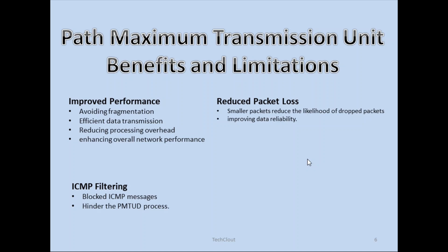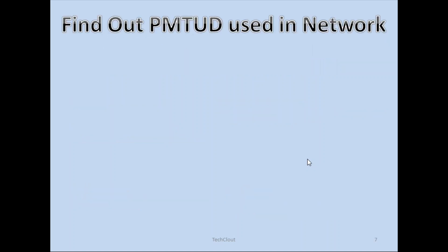It also provides ICMP filtering so that we can block ICMP messages or hinder the PMTUD process. It also looks for path changes, so in a big network or multi-hop network, if the path gets changed, it will re-initiate the discovery process to identify which path PMTUD can follow to avoid fragmentation and do minimal fragmentation.